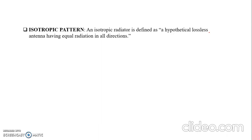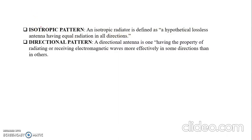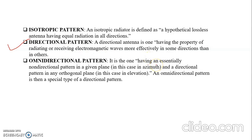An isotropic radiator is a hypothetical antenna — no real antenna radiates equally in all directions. An isotropic pattern is therefore a hypothetical pattern. A directional pattern is very practical: a directional antenna has the property of radiating or receiving EM waves more effectively in some directions, such as the z direction. Other less significant patterns appear in other directions.